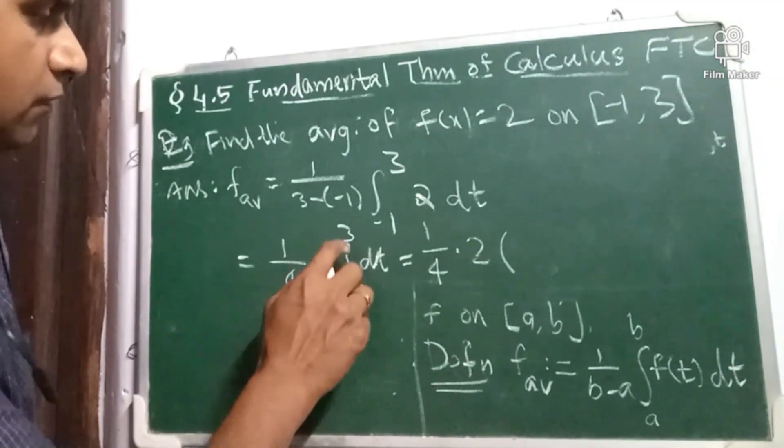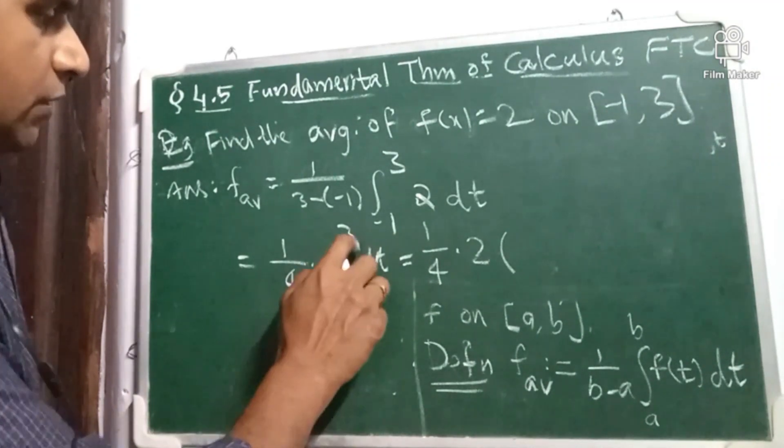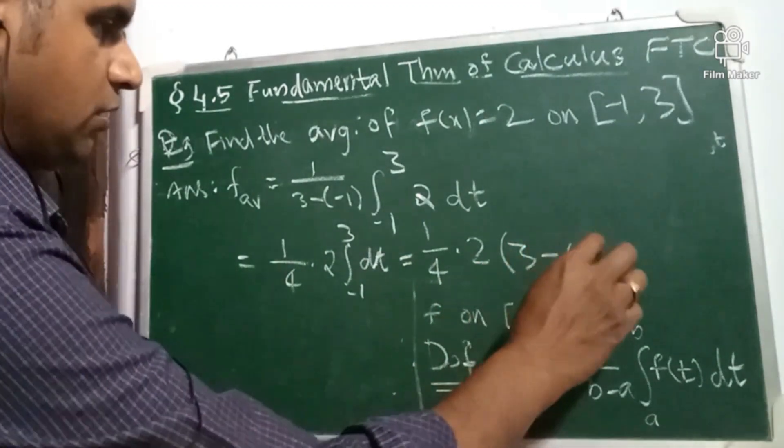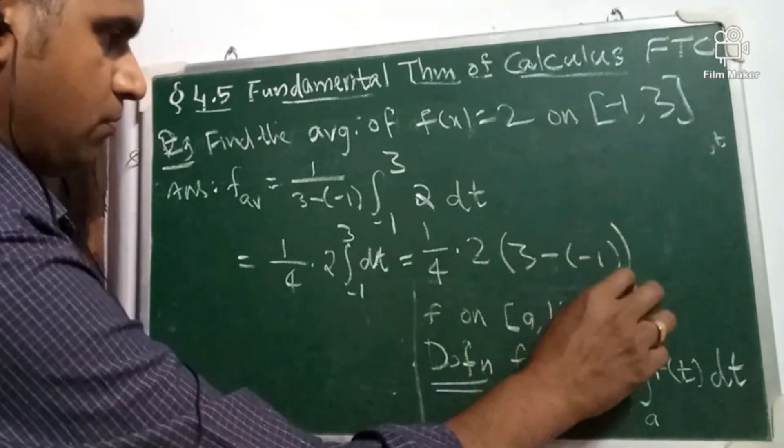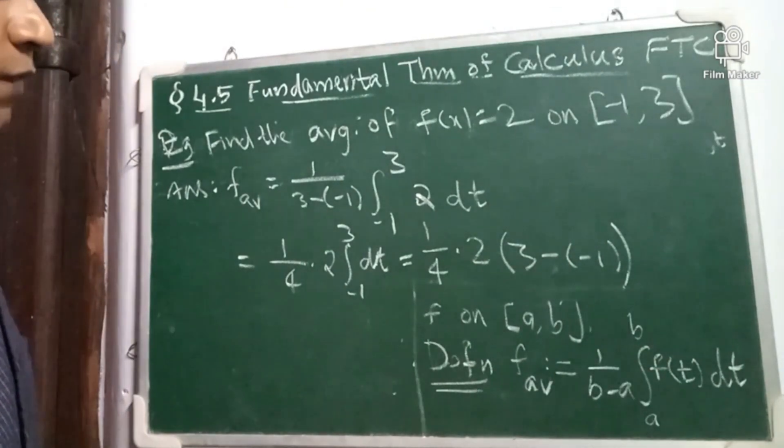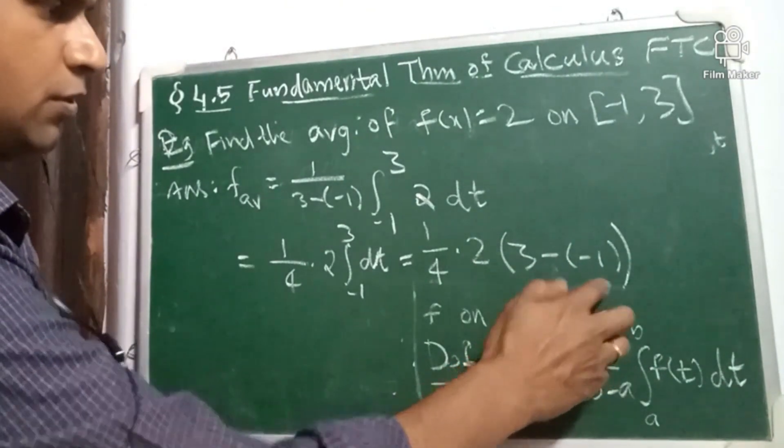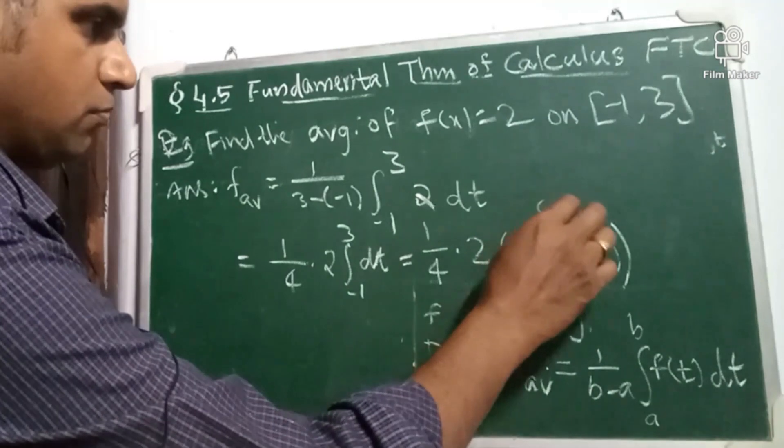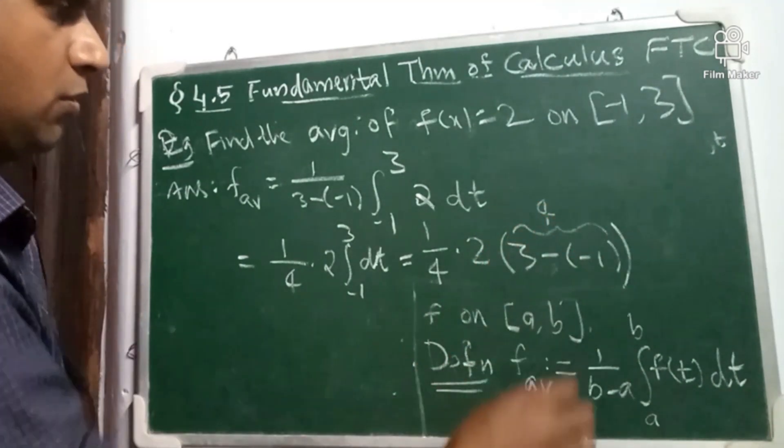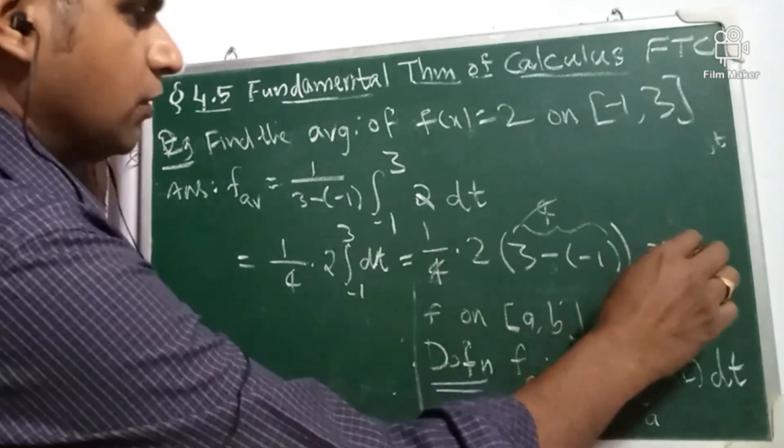So length of the interval -1 to 3 is 3 minus -1, which is 4. So this part is 4. So 4 and 4 cancel and we will get the answer here.